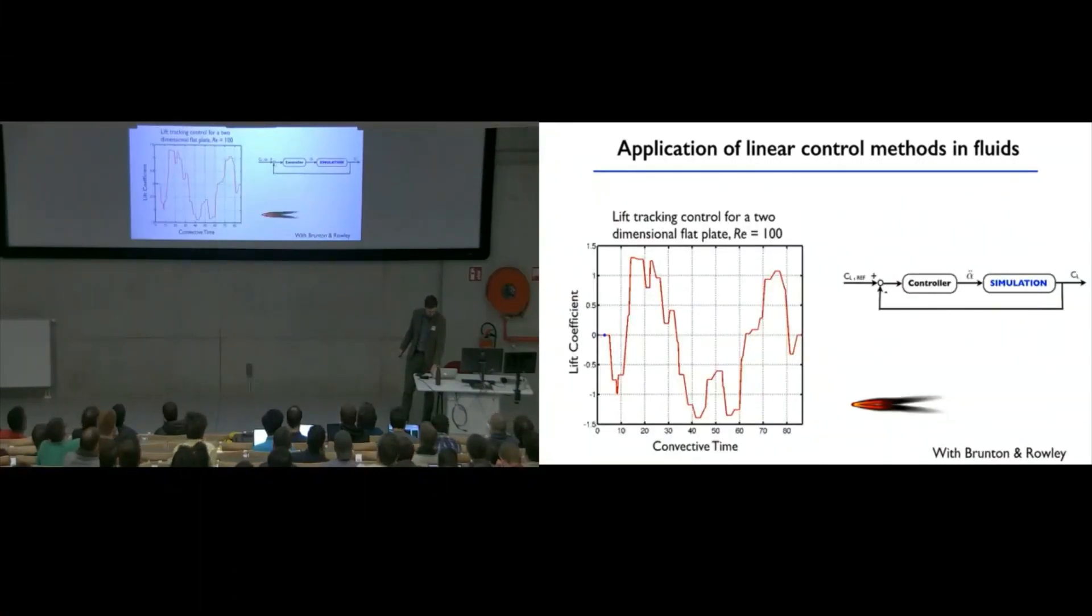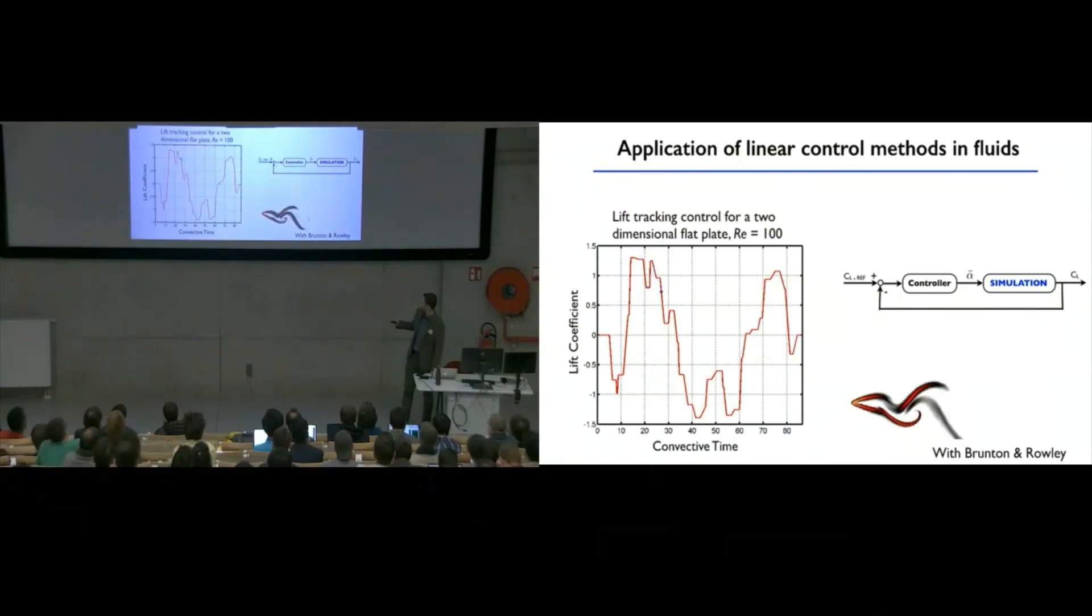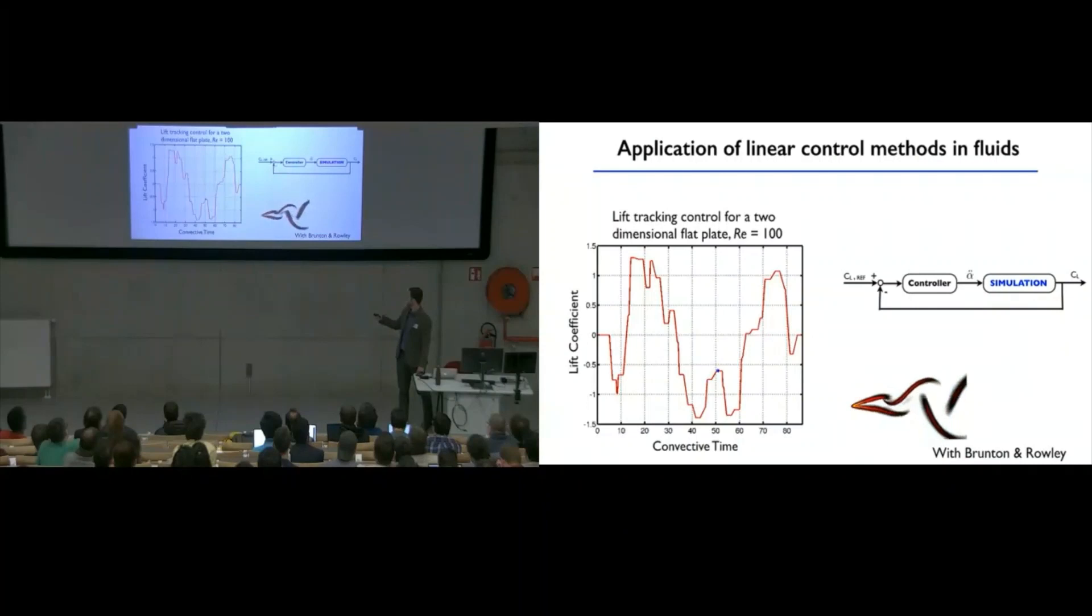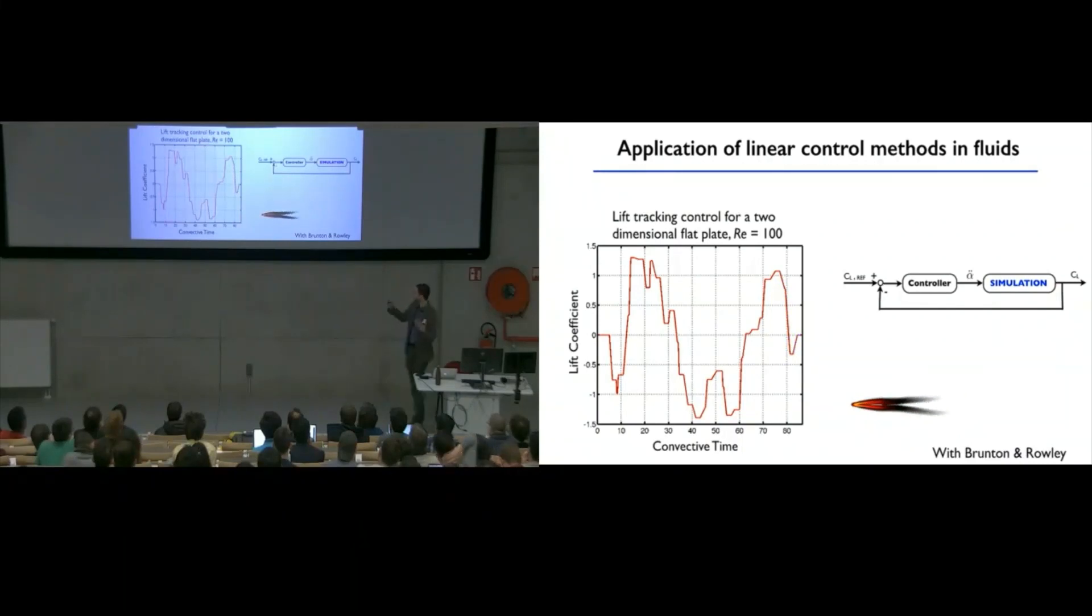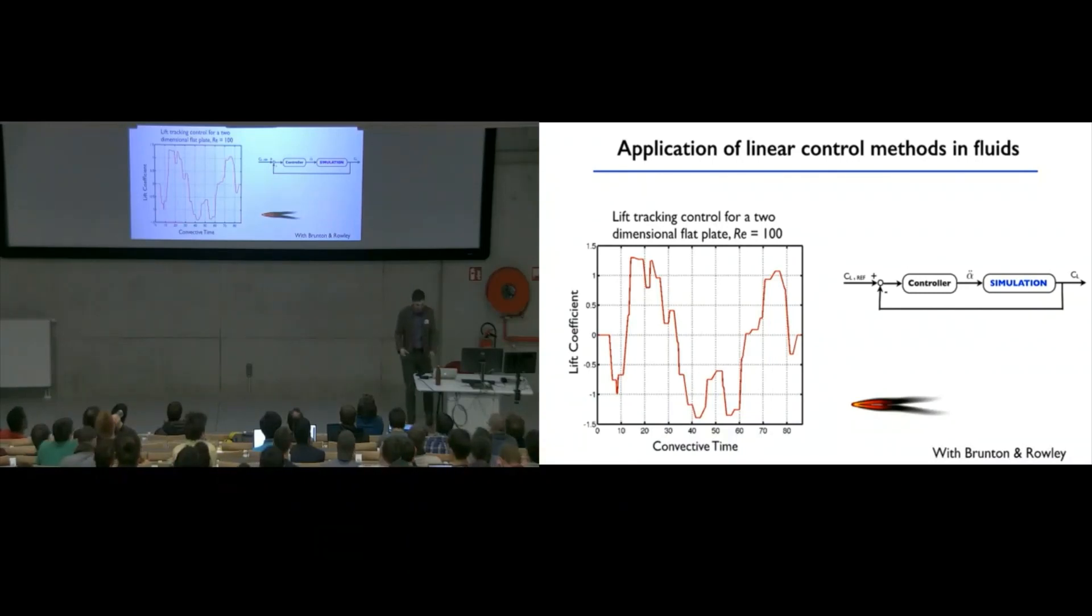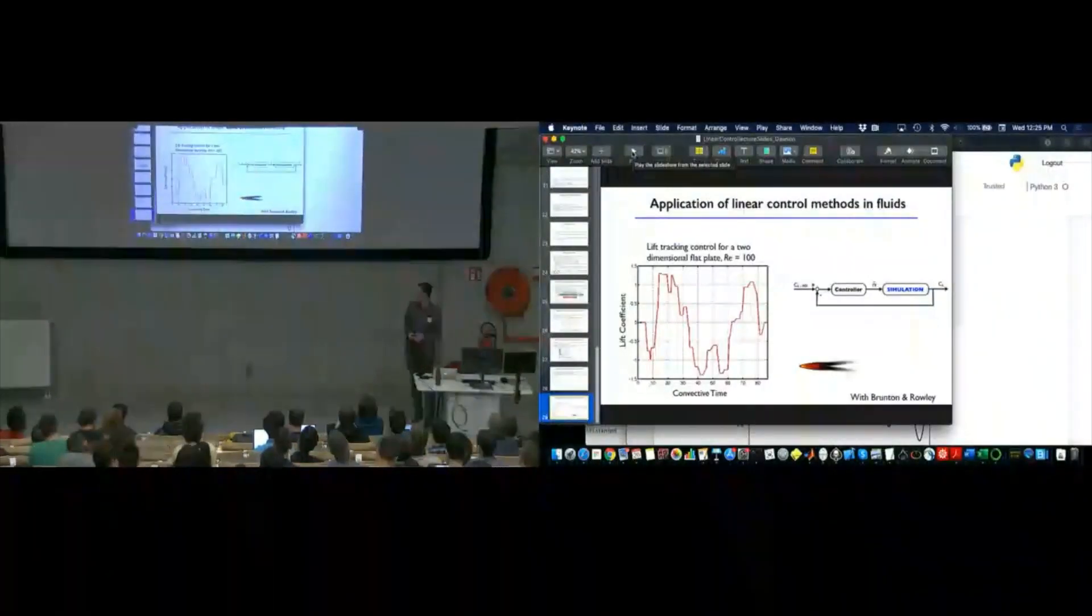So, the last example that I wanted to show was an example that I did actually with Steve and Clancy early in my PhD, where we are controlling the lift on this airfoil, where now our desired lift is some arbitrarily varying function. And so, we design a feedback controller that tells our airfoil how to move in order to obtain this desired lift coefficient. So, it's a relatively simple system because it's a low Reynolds number, and we're directly measuring the thing that we're trying to control. But it's a highly non-linear system because we're going over quite a large range of angles of attack, but linear control works. So, and that basically wraps up the material that I have. So, I'm happy to take any other questions or comments at this point.